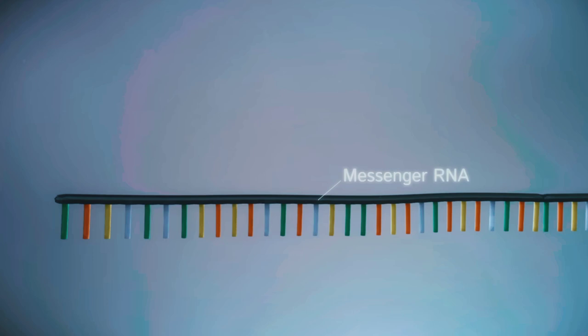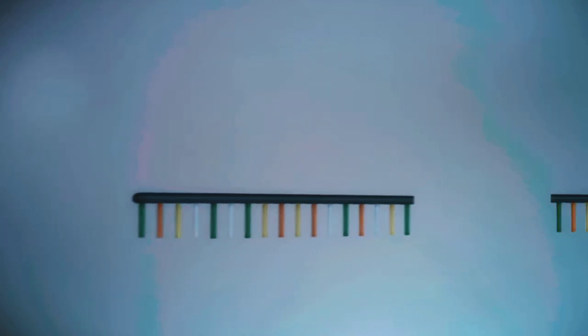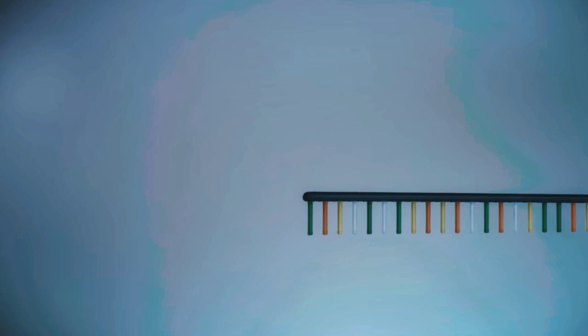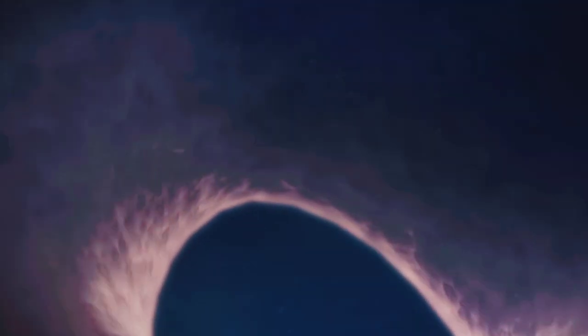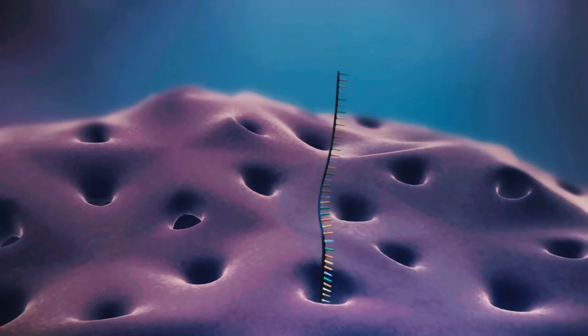Before the messenger RNA can be used as a template for the production of proteins, it needs to be processed. This involves removing and adding sections of RNA. The messenger RNA then moves out of the nucleus into the cytoplasm.